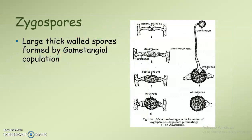Next we can see zygospores. These are large, thick-walled spores formed by gametangial copulation. The two hyphae or gametangia fuse, and after fusion a zygote is produced. This zygote develops into a thick-walled resting spore called a zygospore, which undergoes germination to form sporangia. Mucor is an example.